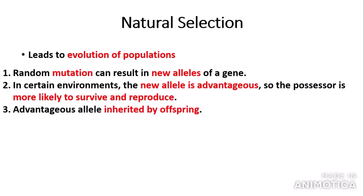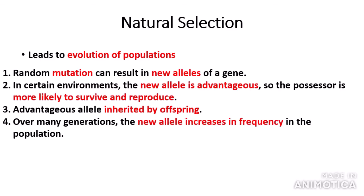As they are more likely to survive and reproduce, the advantageous alleles will be inherited by the offspring, so the offspring will possess the same advantageous alleles. Over many generations, the new allele increases in frequency in the population. All in all, the species becomes well adapted to the environment, and the new advantageous allele often becomes the most common allele in the population.